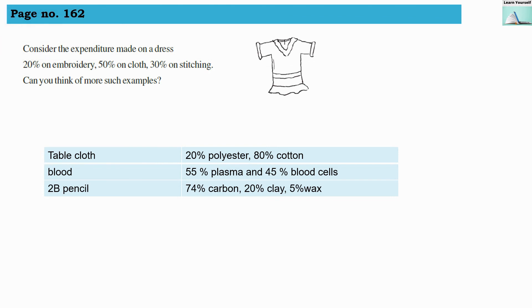Think, discuss and write, page number 162. Consider the expenditure made on a dress: 20% on embroidery, 50% on clothes, 30% on stitching. Can you think of more such examples? So here basically we have to show a comparison in percentage, whether it is an expenditure or whether it is a material made up of, or any some other comparison. So here I have noted down three types of examples. You can also write here birthday party celebration expenditure, or any material made up of, or your painting colors will vary that 20% you have used blue, 30% you have used yellow.